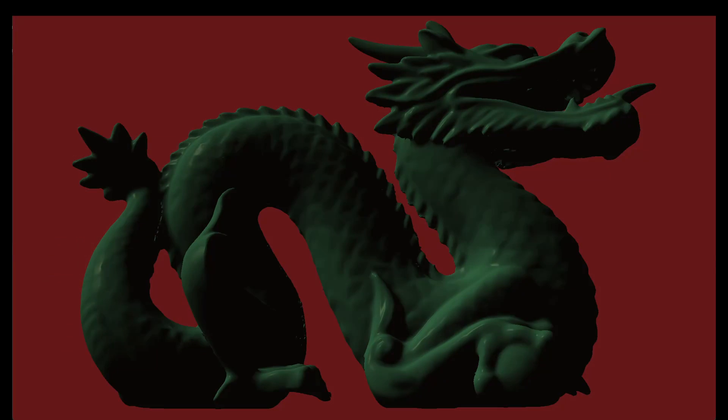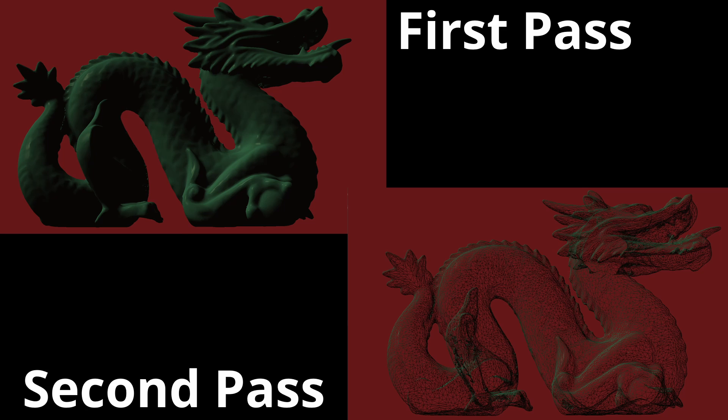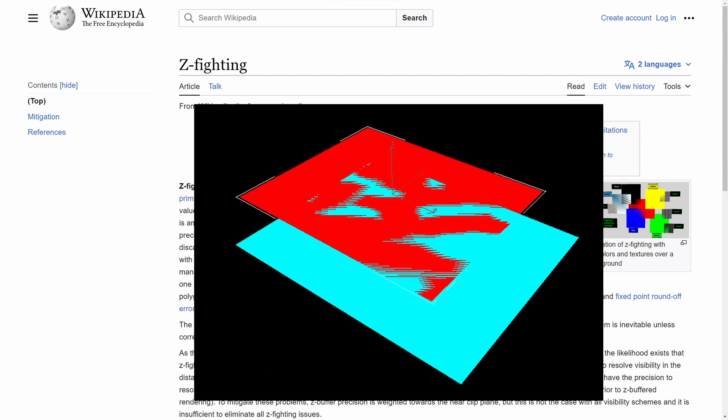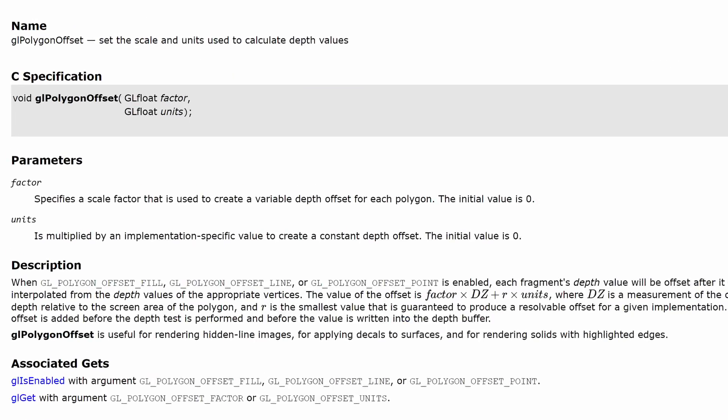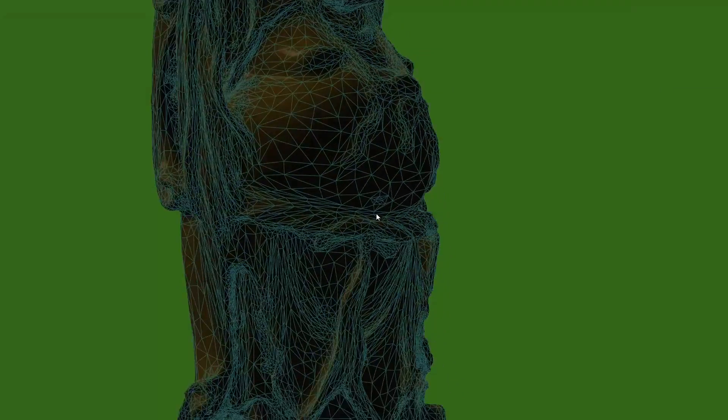Now you can achieve the same effect without the geometry shader by rendering the object twice, first with solid triangles and then with wireframe. This can cause z-fight between the two passes which can be mitigated using Polygon Offset. We can implement this technique in a single pass using the GS and avoid the z-fight problem.